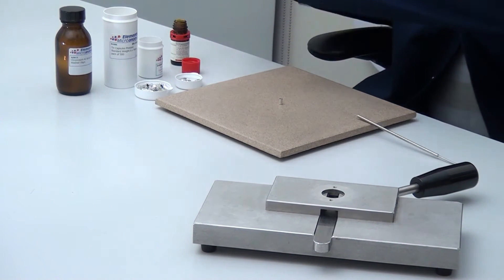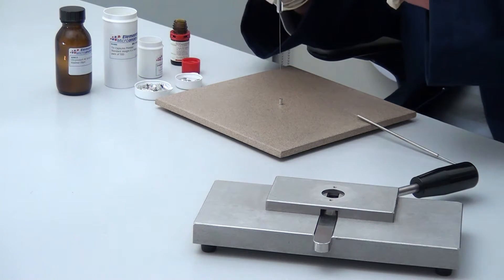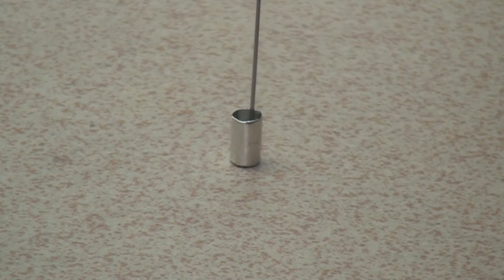The technician is preparing a liquid sample for analysis. A smooth-walled tin capsule is used, or silver if the analysis is for oxygen.